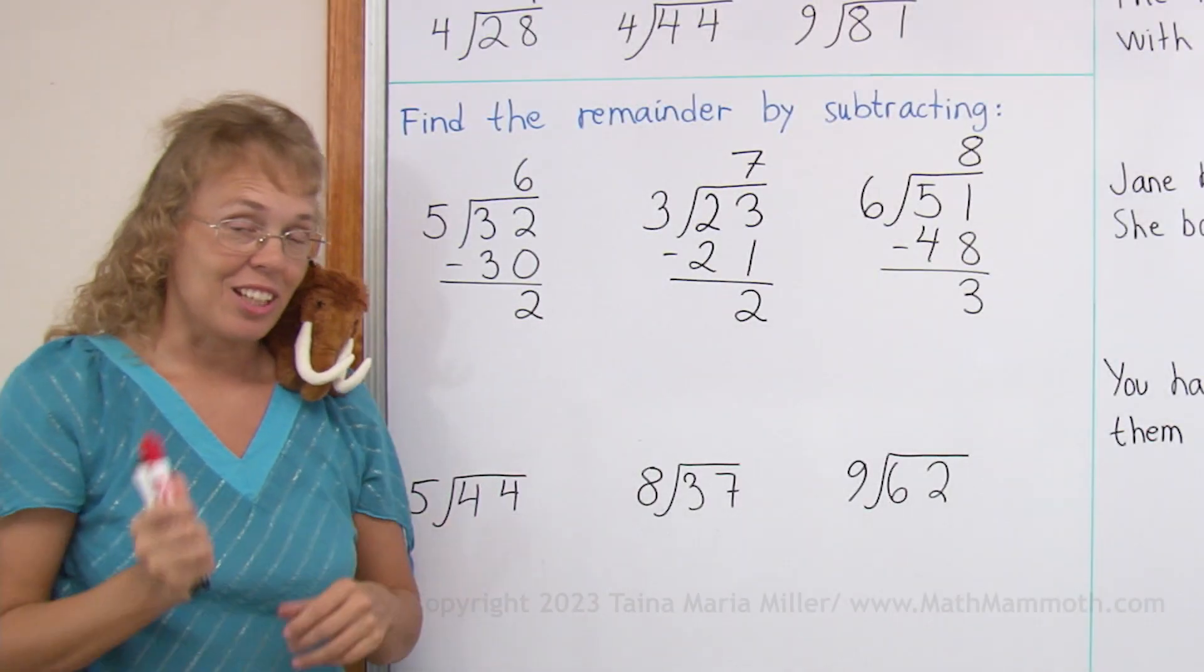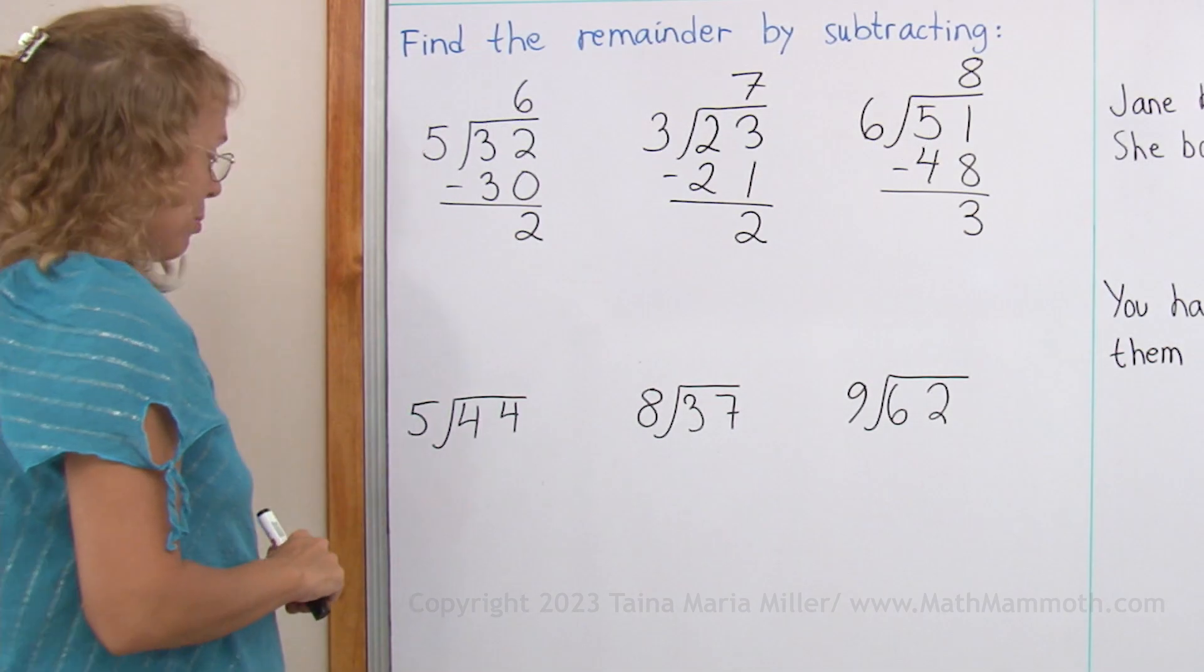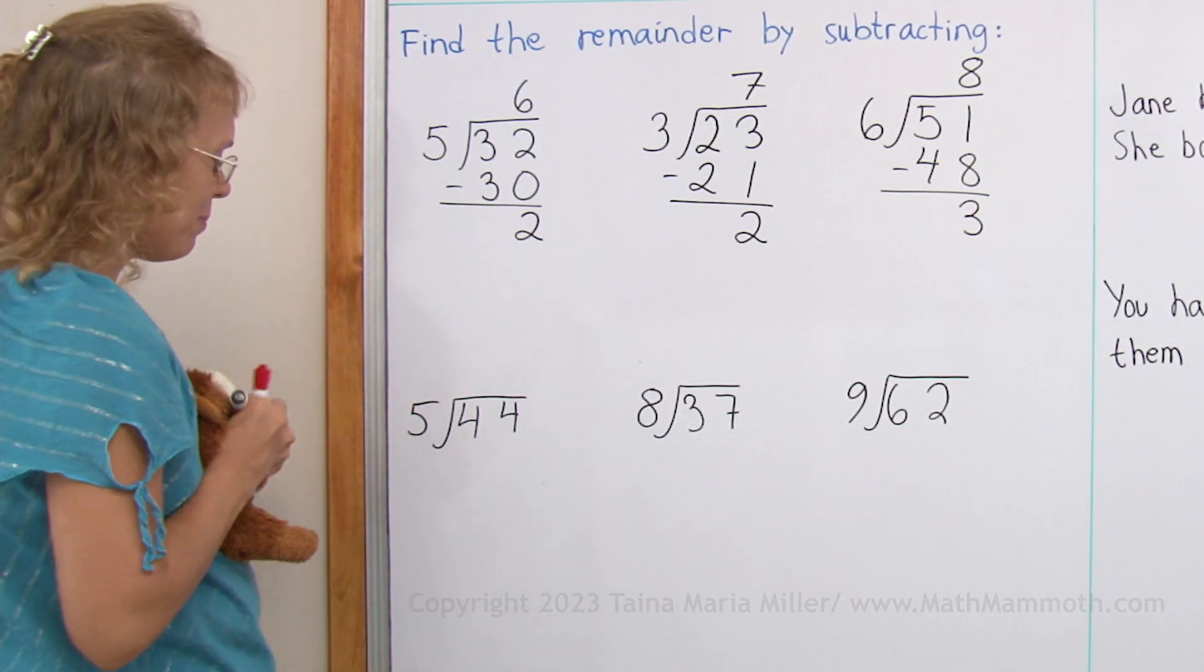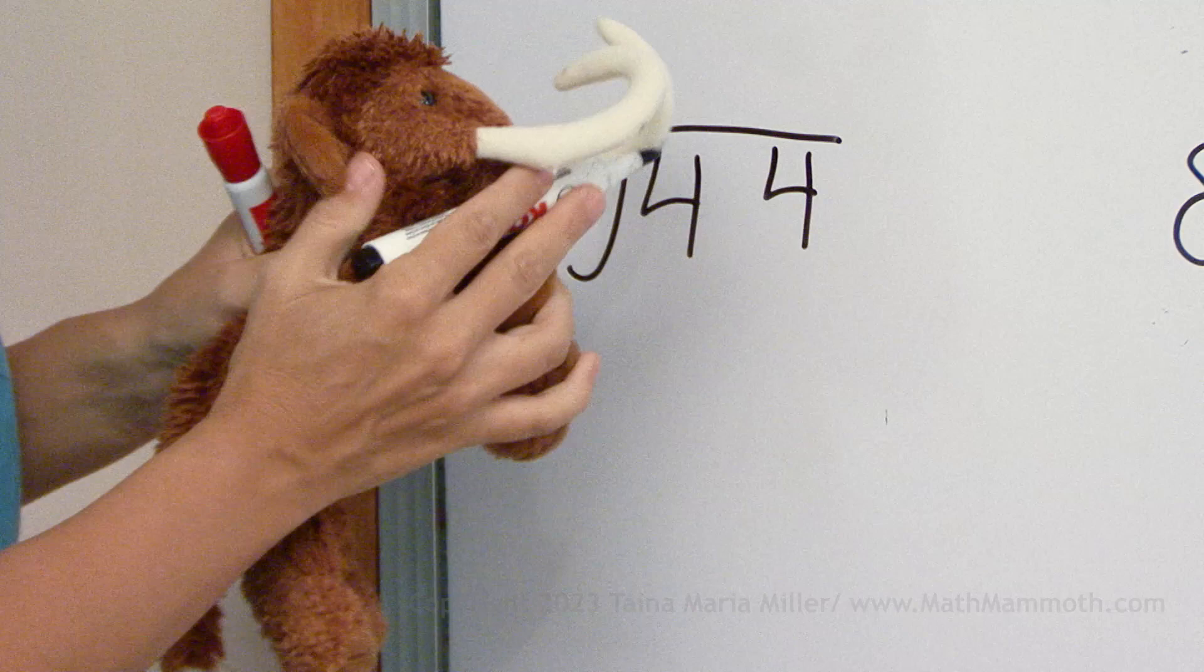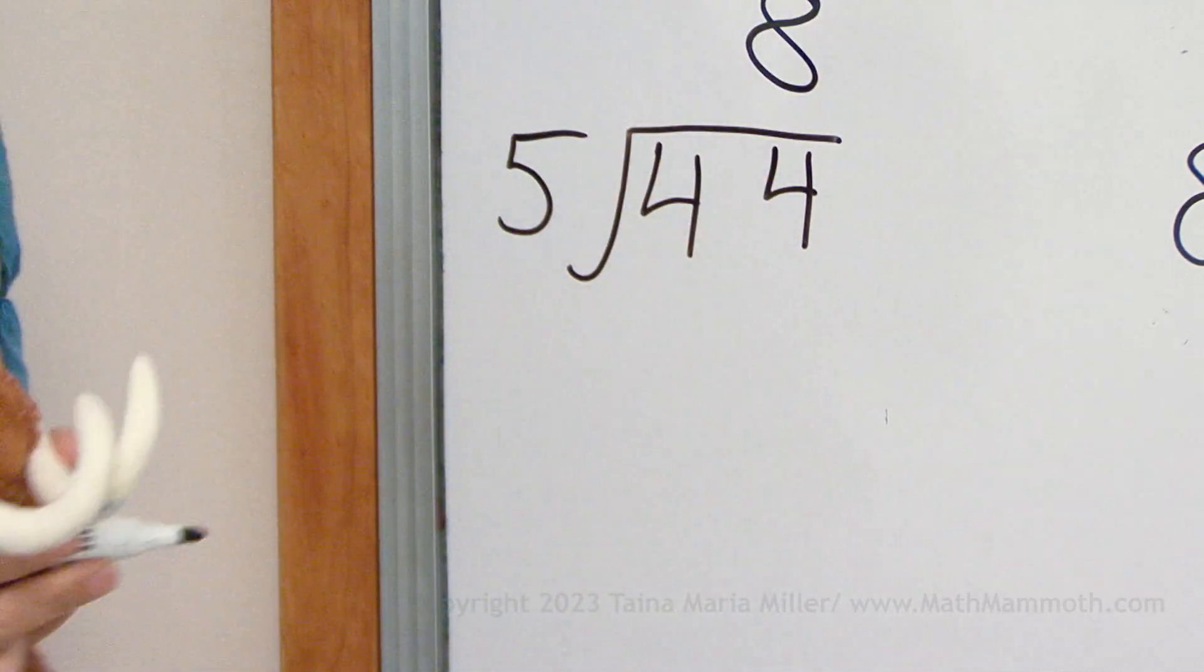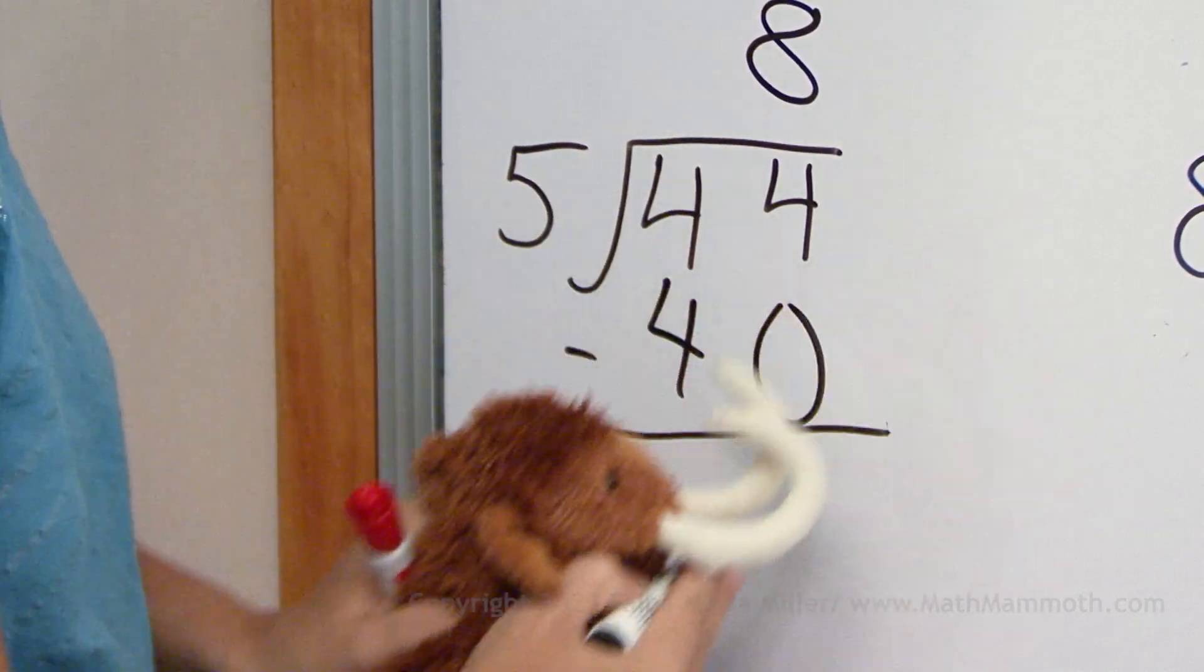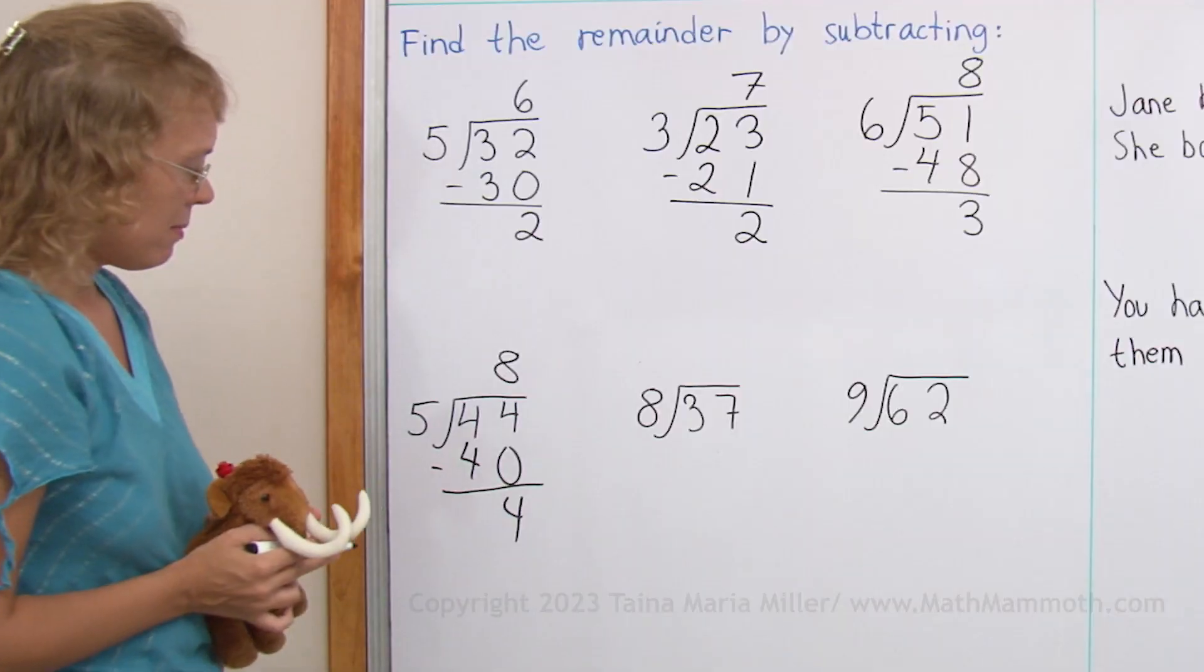Try this last 3 yourself first. Mati, you're on. Come on, how many 5's in 44? Right, 8 fives. And then? 8 times 5. There you go.